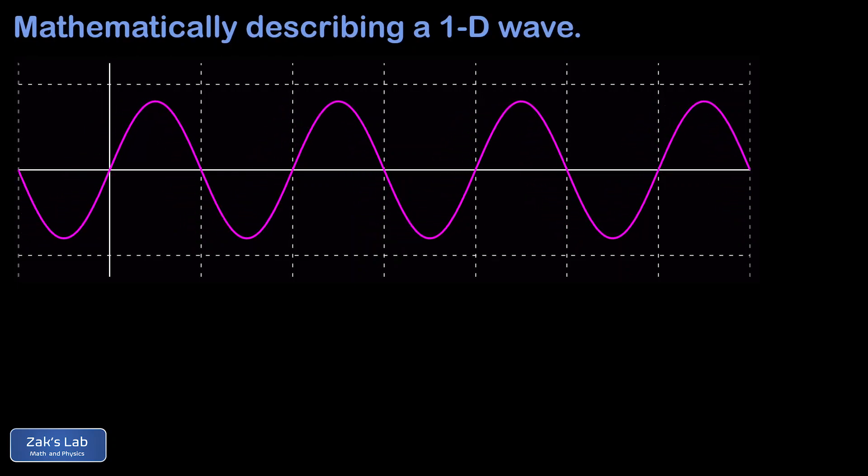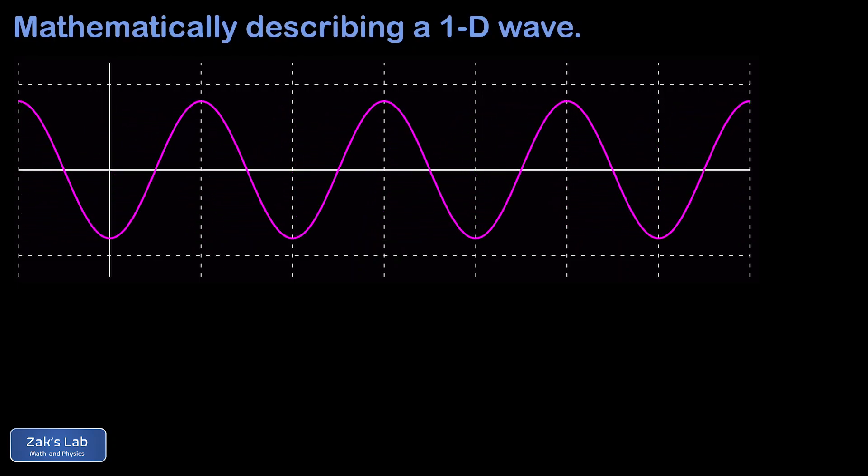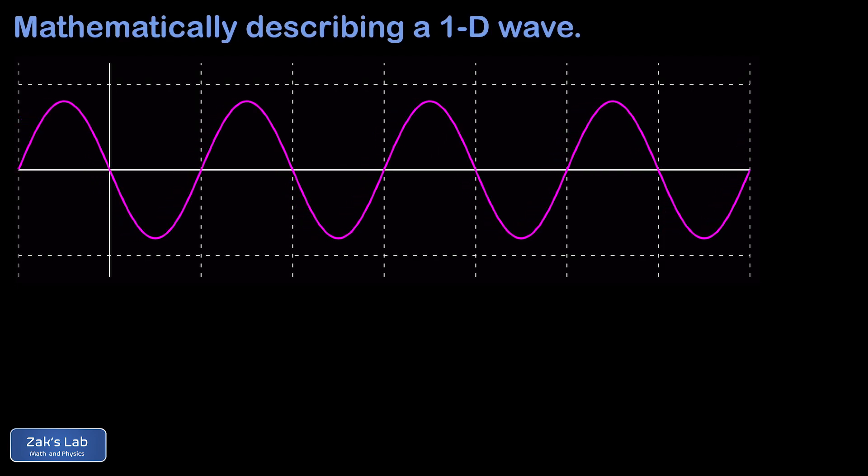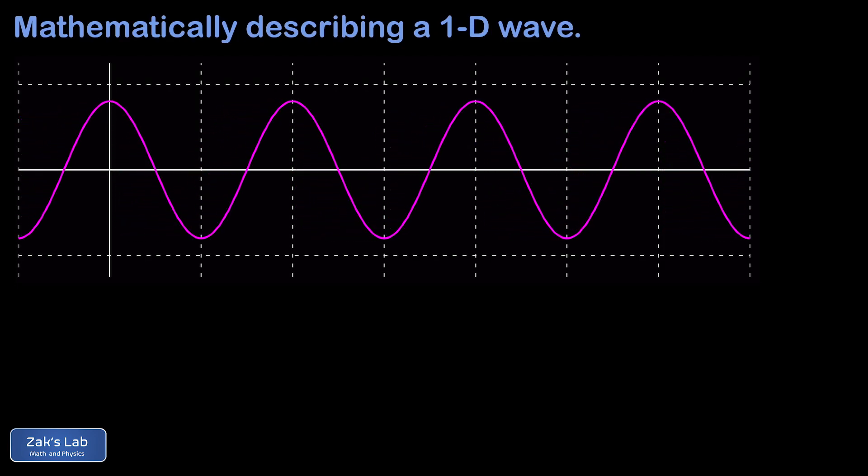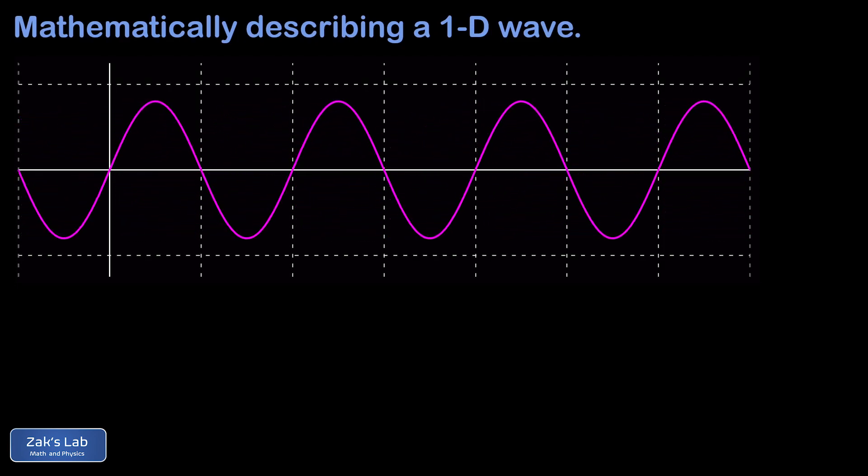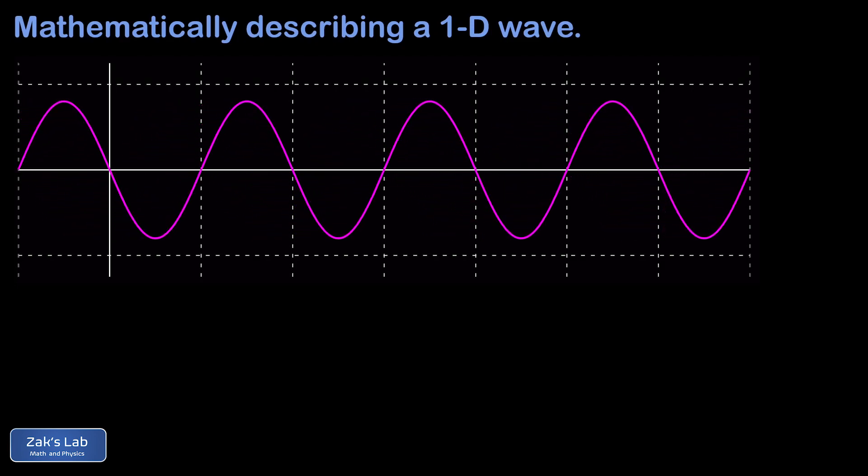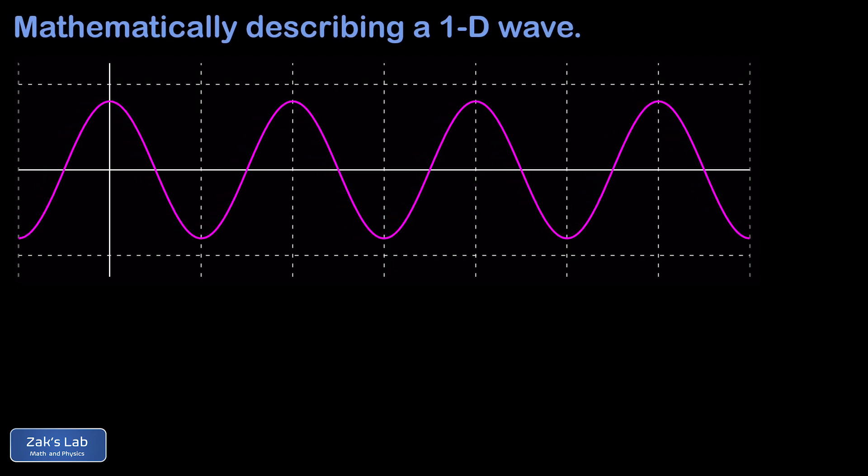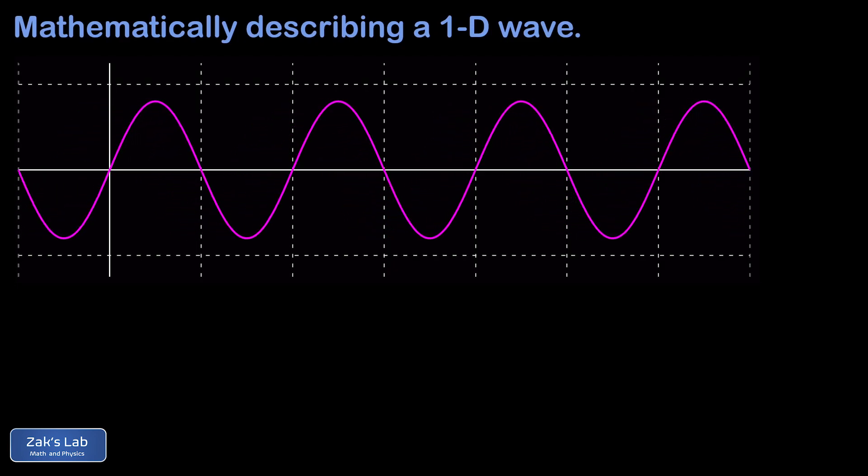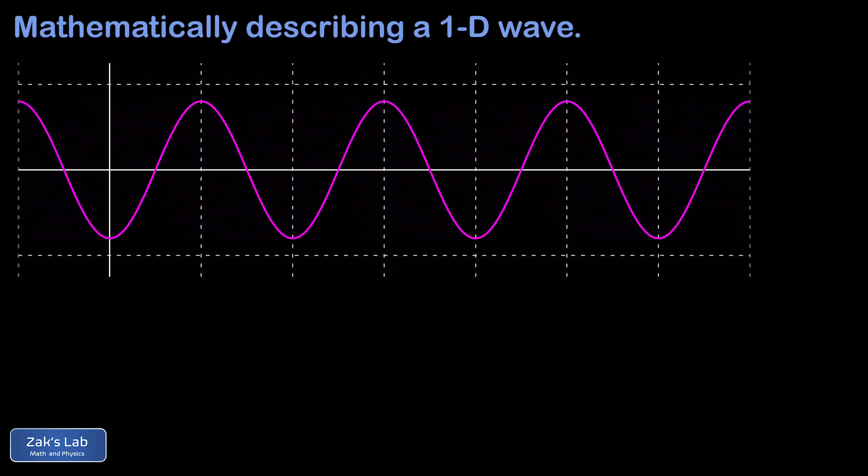This is the first video in a short series on the mathematics of waves, and in this video we're deriving the precise mathematical description of a transverse wave moving on a string. This description is called the wave function, and the wave function is actually a function of two variables, since the y value along the string is a function of both time and position.